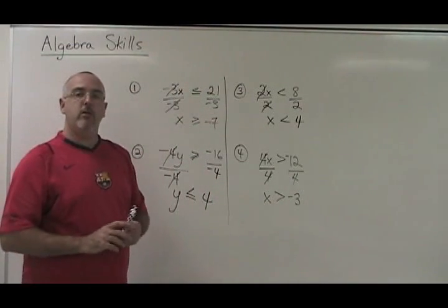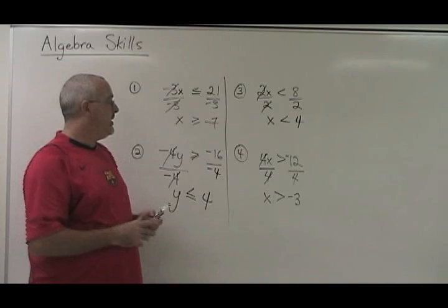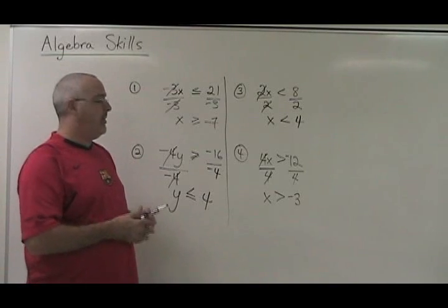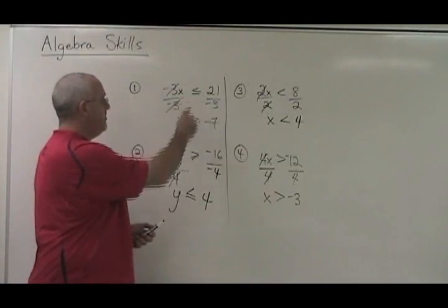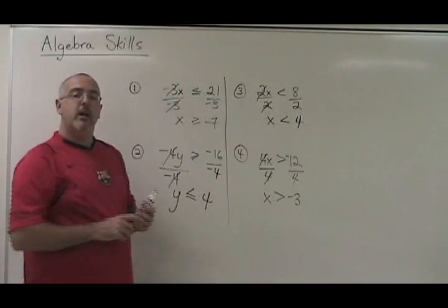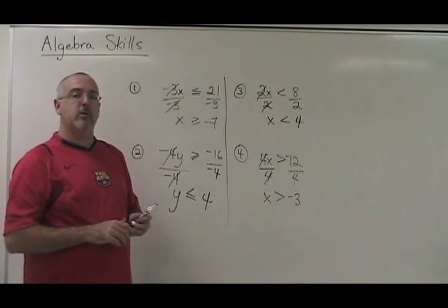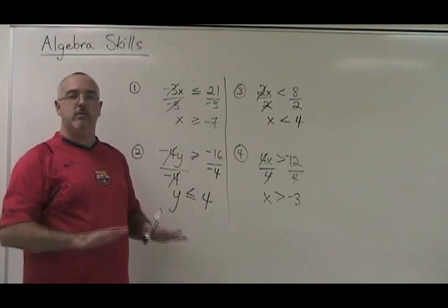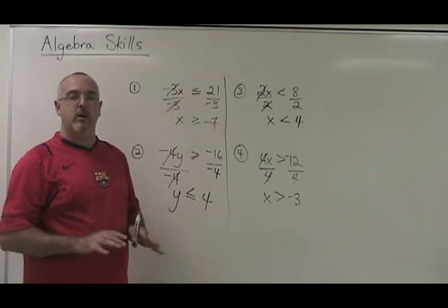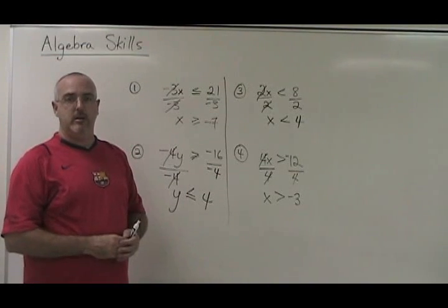Whenever you divide both sides of an equation by a negative number, you must flip the symbol backwards. And whenever you divide both sides of an equation by a positive number, you leave the symbol facing the way it already is.